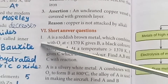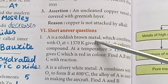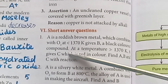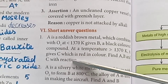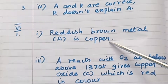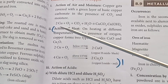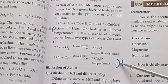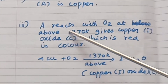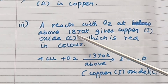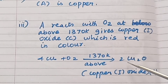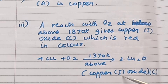Short answer questions. Question 1: A is a reddish brown metal which combines with oxygen at less than 1370 K to give B, a black coloured compound; and above 1370 K gives C, a red coloured compound. Find A, B, and C. Answer: A is copper (Cu). Below 1370 K: 2Cu + O2 → 2CuO (copper 2 oxide, black) — this is B. Above 1370 K: 4Cu + O2 → 2Cu2O (copper 1 oxide, red) — this is C.